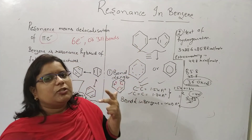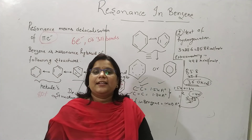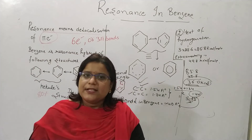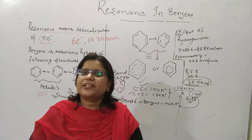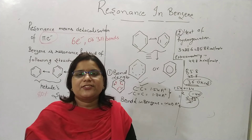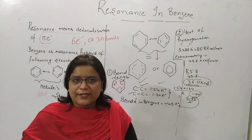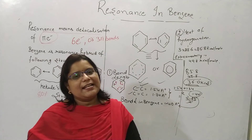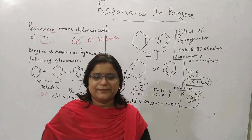These two proofs — bond length and heat of hydrogenation — show that benzene is the resonance hybrid of the Kekulé structure, having neither a complete double bond nor a complete single bond structure; it is intermediary. I hope you enjoyed the lecture. Any doubts, kindly ask in the comment section. Please like and subscribe. Thank you.